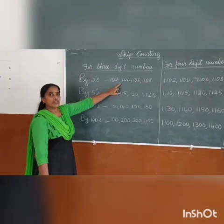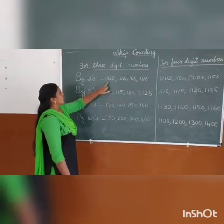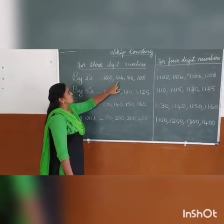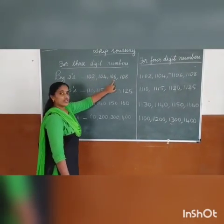By 2s, you jump away 1 number. 102, 104, 106, 108.